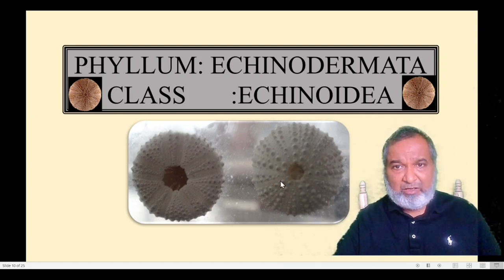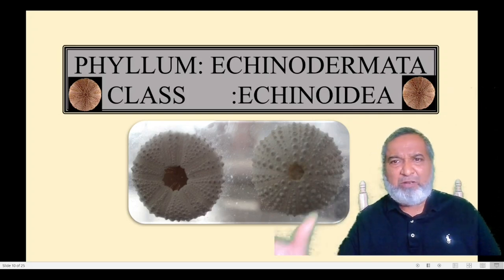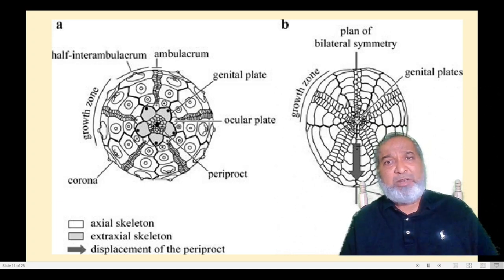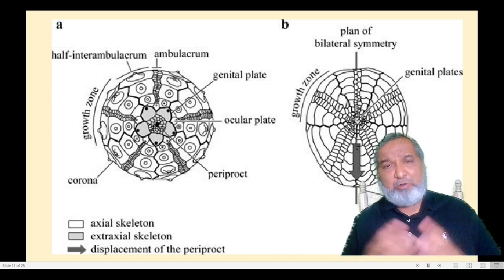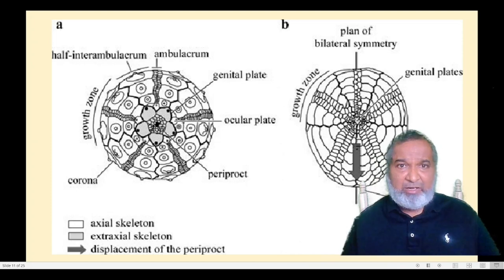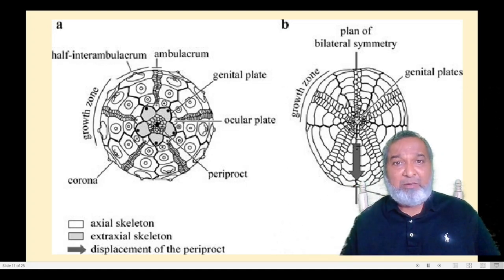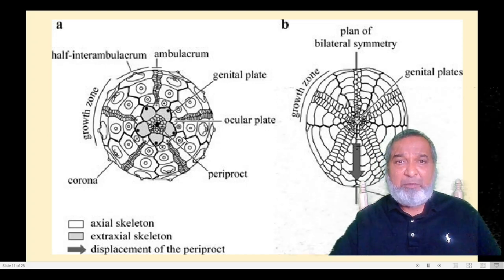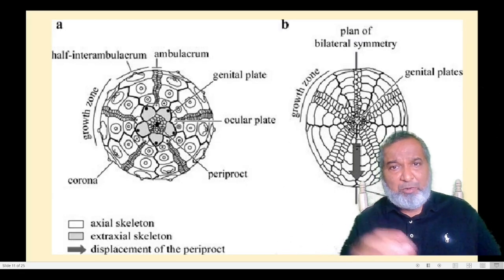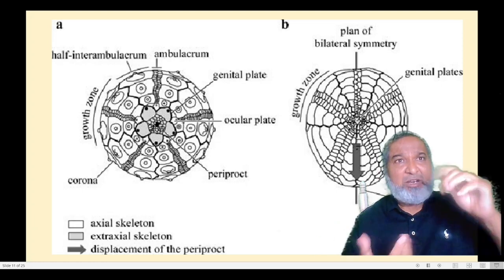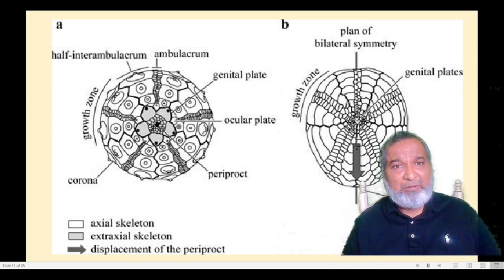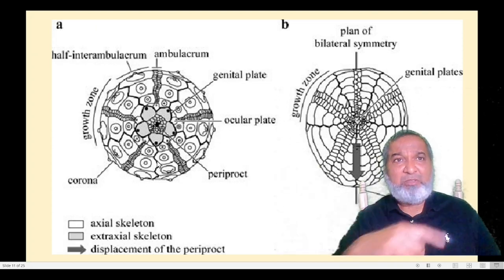Next, Phylum Echinodermata, class Echinoidea. We have a glass model specimen because the exoskeleton is fragile — if pressed it would break. The body of echinoids is divided into two categories: Regularia and Irregularia. The body is composed of three main parts: the corona, the apical disc, and the peristome. In Regularia, the apical disc and peristome lie on the same axis of symmetry, giving radial symmetry. In Irregularia the body is heart-shaped and the apical disc and peristome are not on the same line.